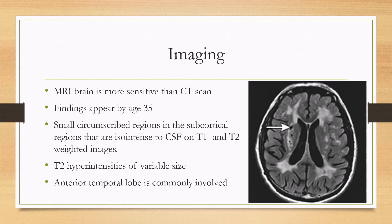Imaging is very important because it's what usually leads to the diagnosis. MRI brain is more sensitive than CT of the head. All of the findings will present by age 35. There are two main findings: small circumscribed regions in the subcortical areas that are iso-intense to CSF on T1 and T2-weighted images, as shown by this arrow, and T2 hyperintensities that are also subcortical.